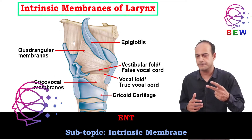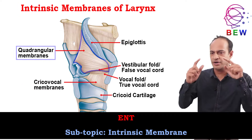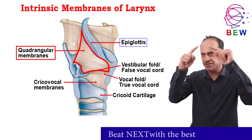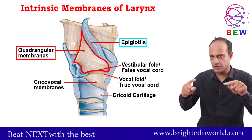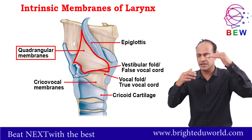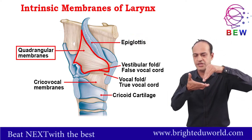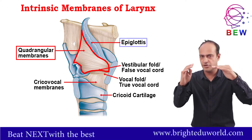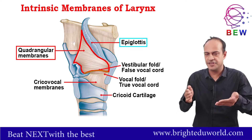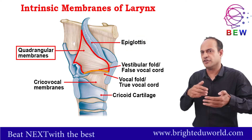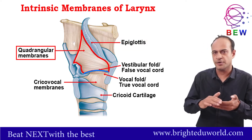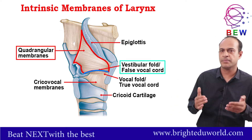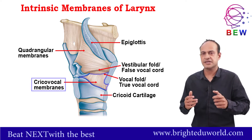There are two intrinsic membranes. The first is the quadrangular membrane, which extends from the epiglottis downward. Imagine it like a curtain that is hanging with the lower part free. The lower free end of the quadrangular membrane forms the false vocal cord.